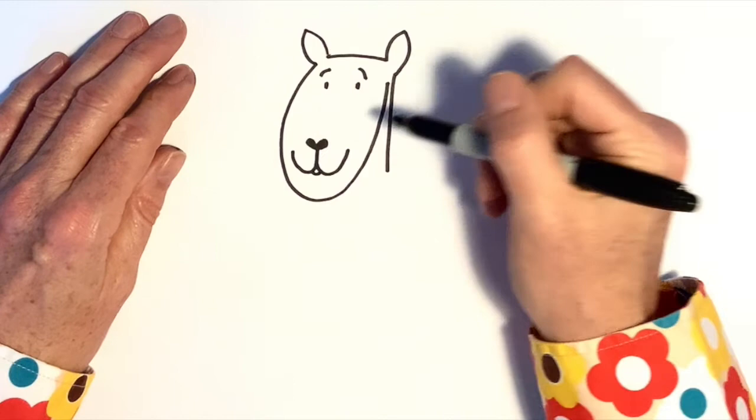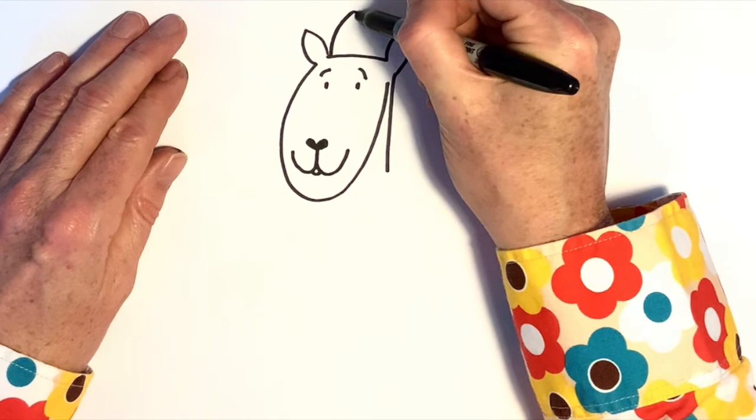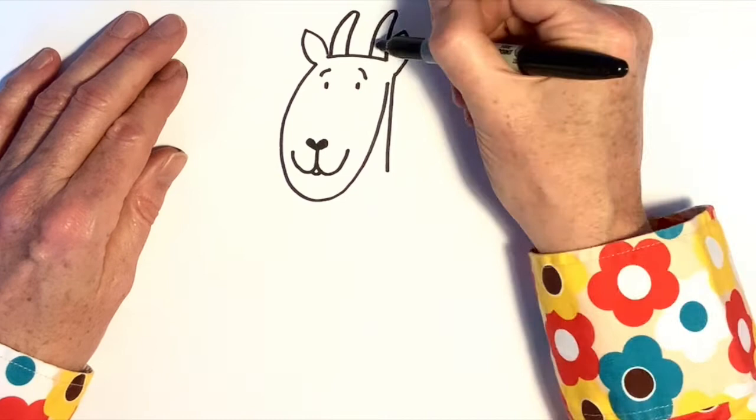Let's give the billy goat two horns, like that. And I'm going to do some lines in each horn to give it a bit of texture.